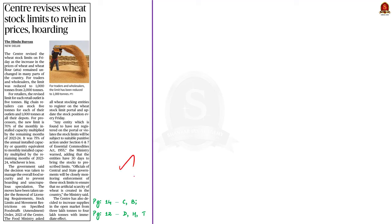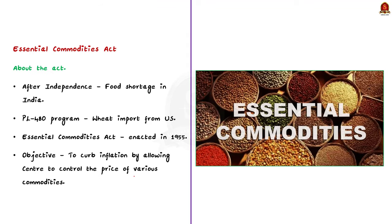Look at this article. The central government has recently revised the stock limits for wheat. In this analysis, let us see about the Essential Commodities Act and issues associated with it. After independence, India was facing huge food shortages and was dependent on imports — for example, importing wheat from the United States under the PL-480 program. To protect the limited available grains from hoarding and black marketing, the Essential Commodities Act was enacted in 1955.